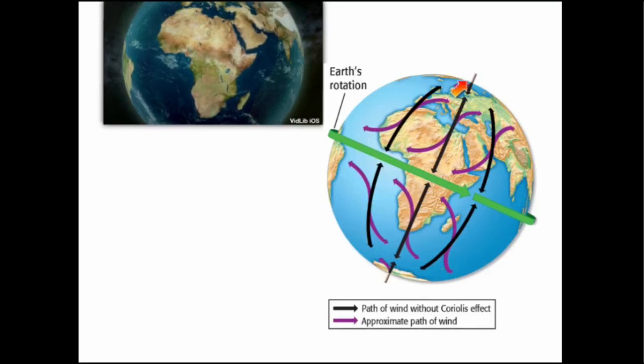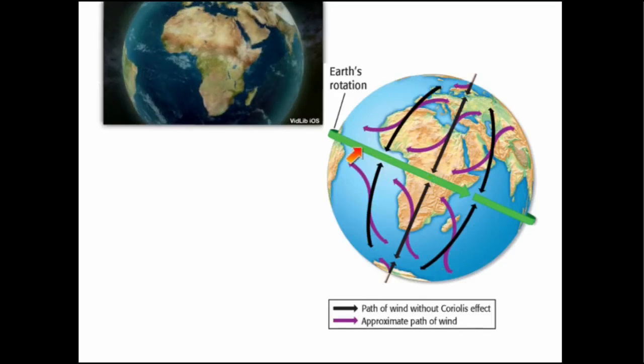Winds will typically travel in straight lines. Then the earth starts to spin like this. As the earth spins it bends the air streams until they look like they do in the purple arrows.